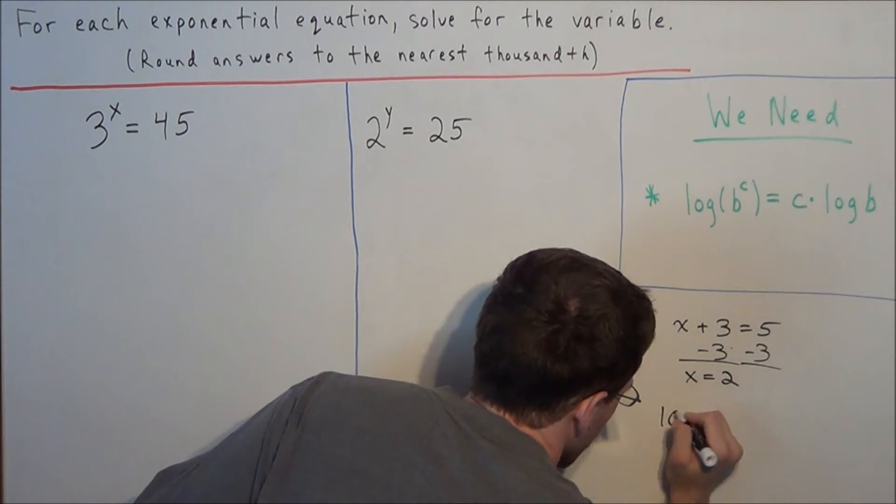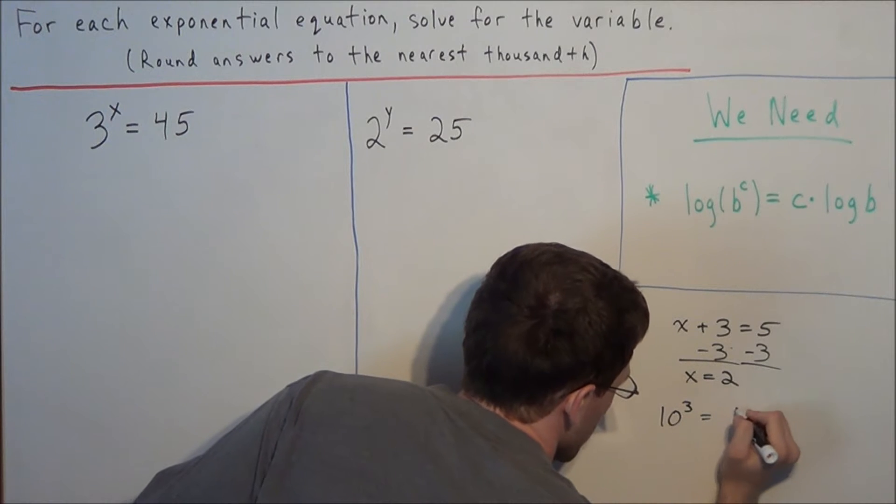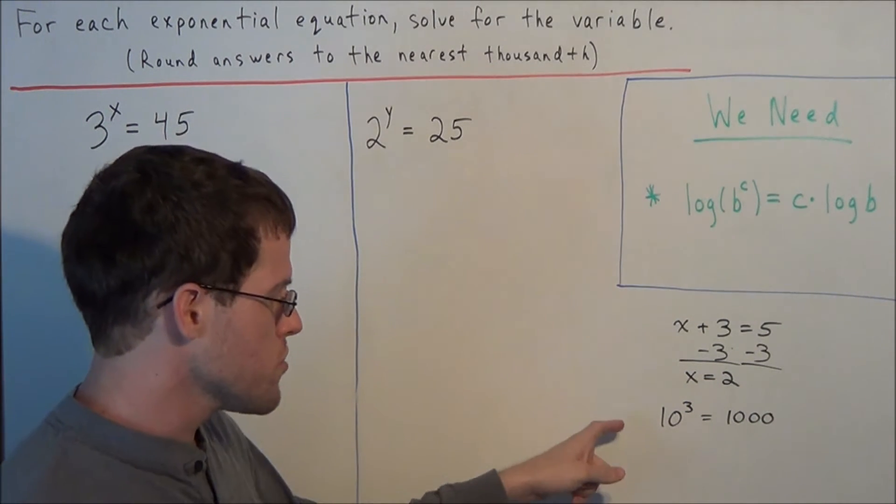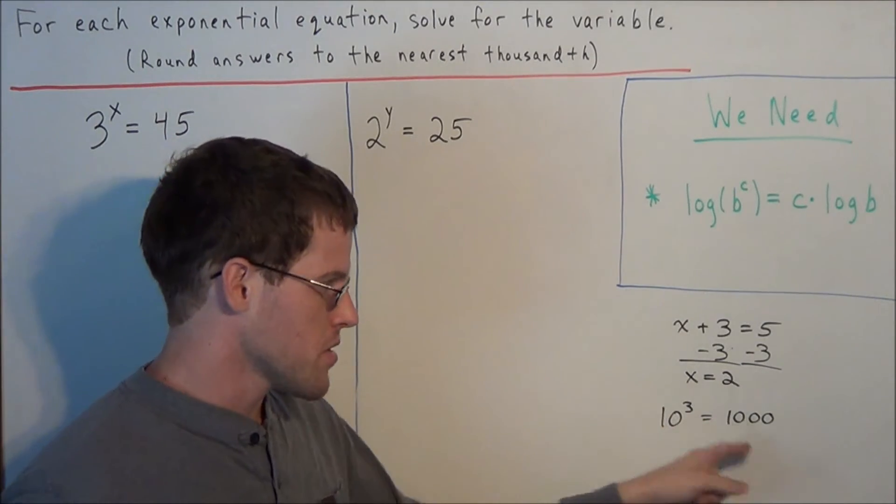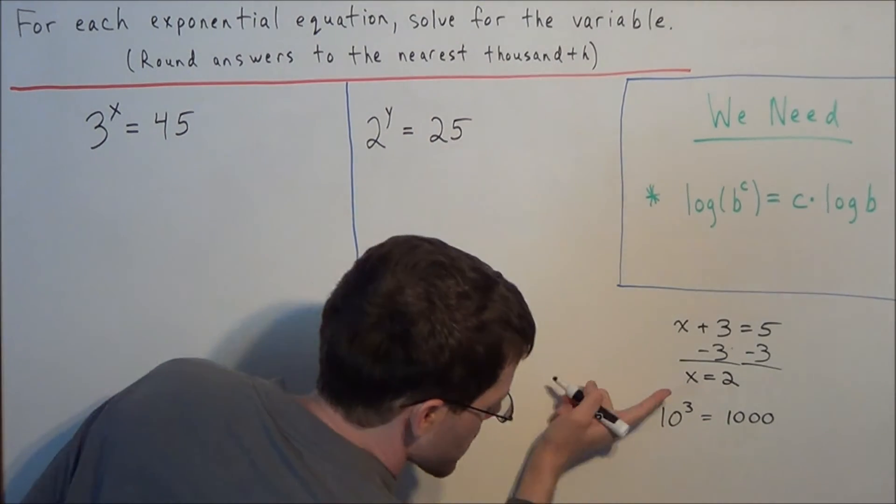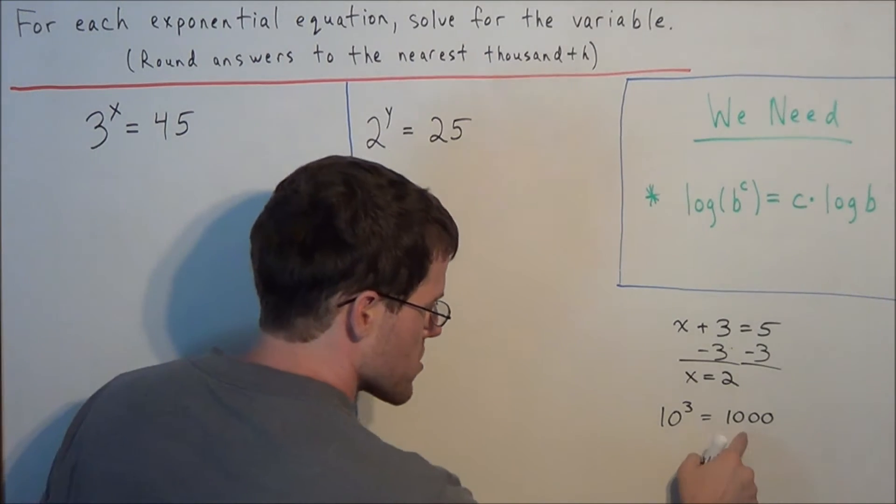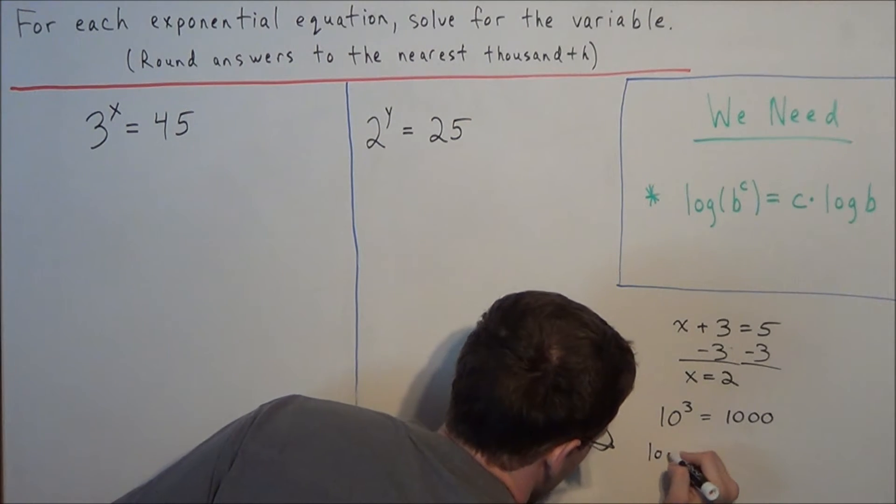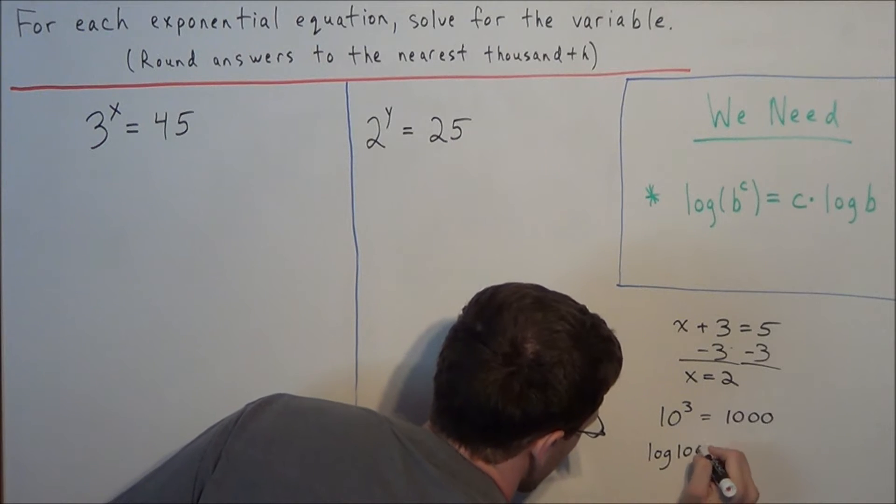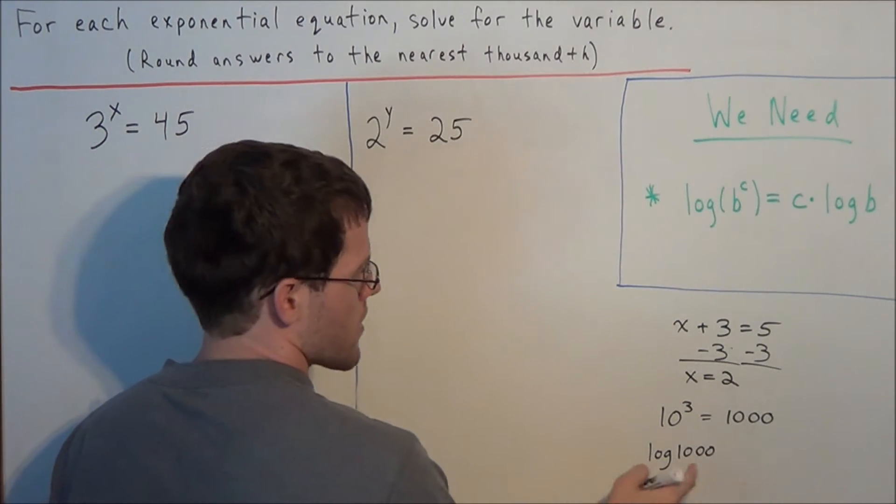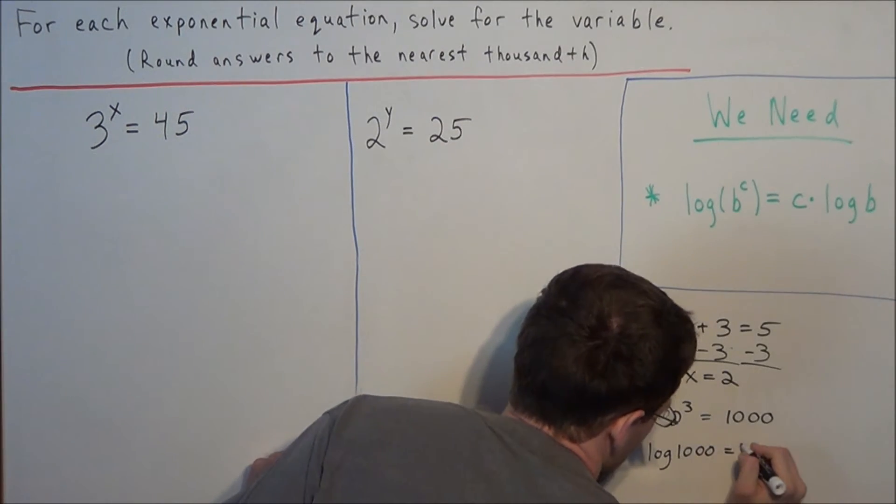For instance, if we take something like 10 to the third, which equals 1000, and we want to undo this operation of exponents to go back to, in this case, we would go back to 3 because the exponent is 3. That means we would take the result of 1000 and we would send it into a logarithm. So now we take this 1000, we send it into the logarithm, and the log of 1000 is equal to 3.